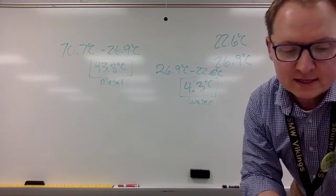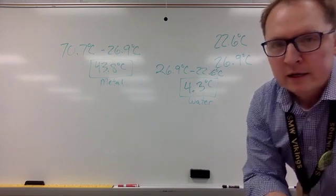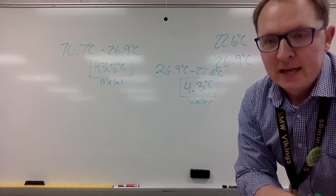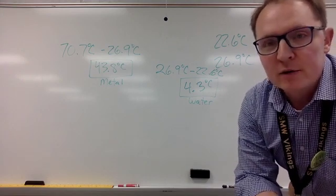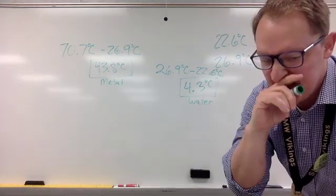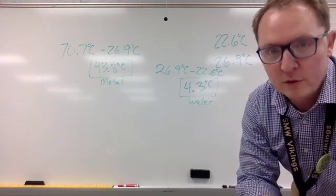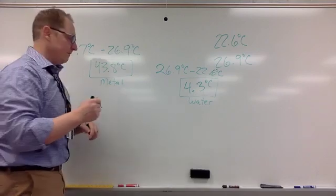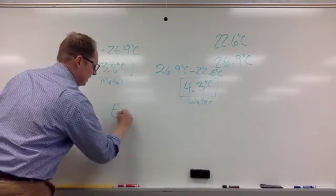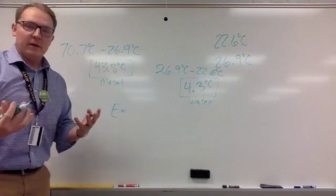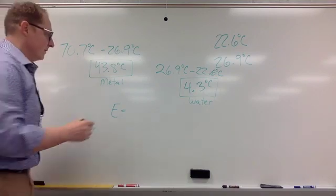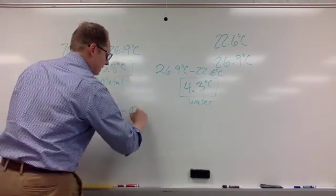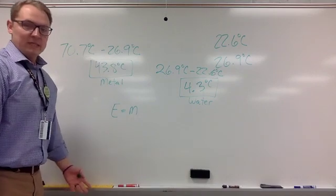Part C says calculate the heat gained by the water using the equation below. This is the first really kind of nasty equation that we've used in this class. This is an energy and specific heat equation. The lab tells you what each part stands for. It says that the energy, that's what the big E stands for, how much thermal energy is either going in or out, is equal to the mass of whatever material we're dealing with.